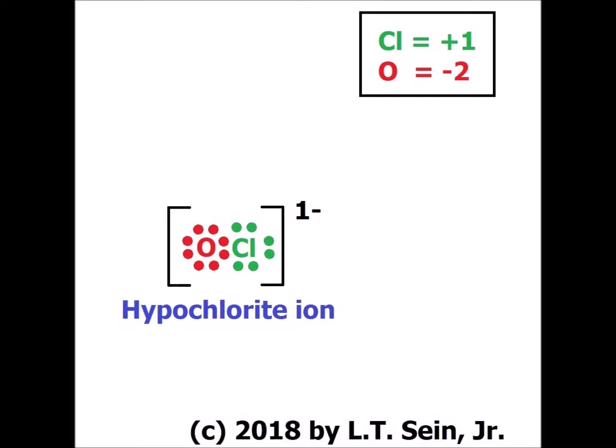Hypochlorite ion is commonly found in household bleaches and in the chlorine that is used to disinfect swimming pools.